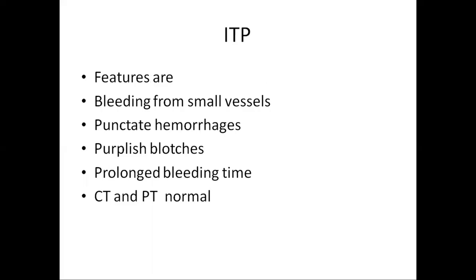The features of idiopathic thrombocytopenic purpura: bleeding is from the smaller vessels, while in haemophilia it was from the larger vessels. Punctate hemorrhages occur throughout the body and there are purplish blotches over the skin. There is prolonged bleeding time, while in haemophilia bleeding time is normal. Clotting time and prothrombin time are normal in idiopathic thrombocytopenic purpura — only the bleeding time is prolonged.